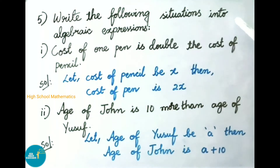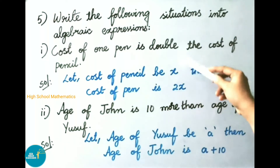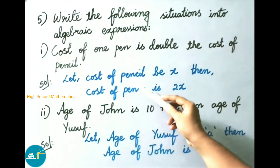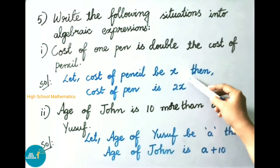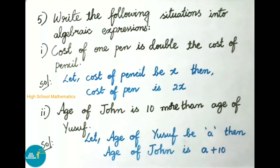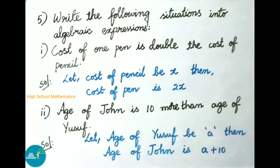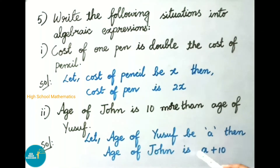Question five: write the following situations as algebraic expressions. First, 'cost of one pen is double the cost of a pencil' — let cost of pencil be x, then cost of pen is 2x. Second, 'age of John is 10 more than age of Yusuf' — let age of Yusuf be a, then age of John is a plus 10.